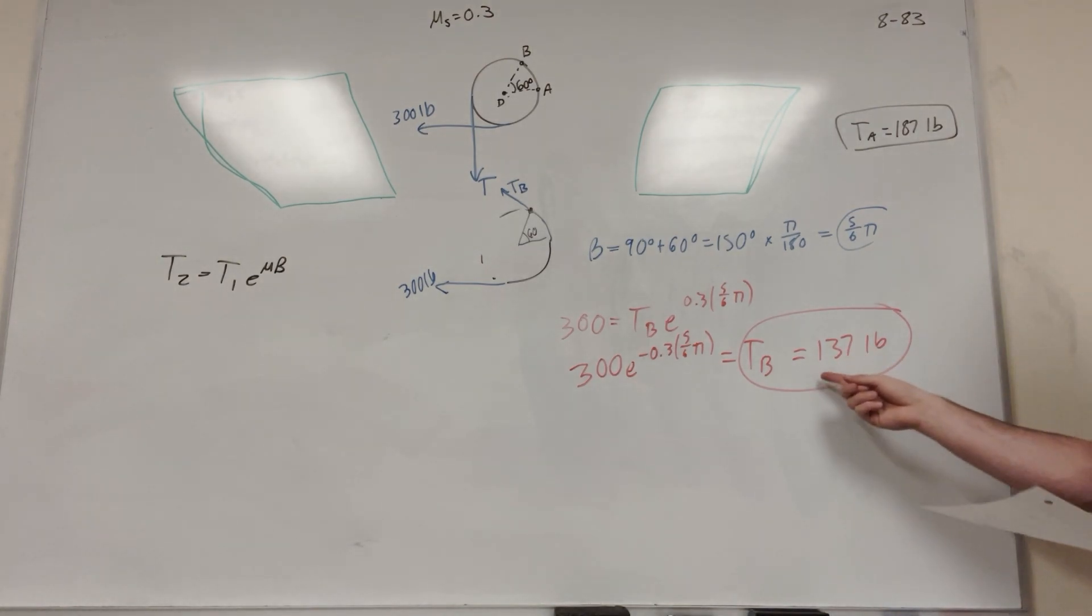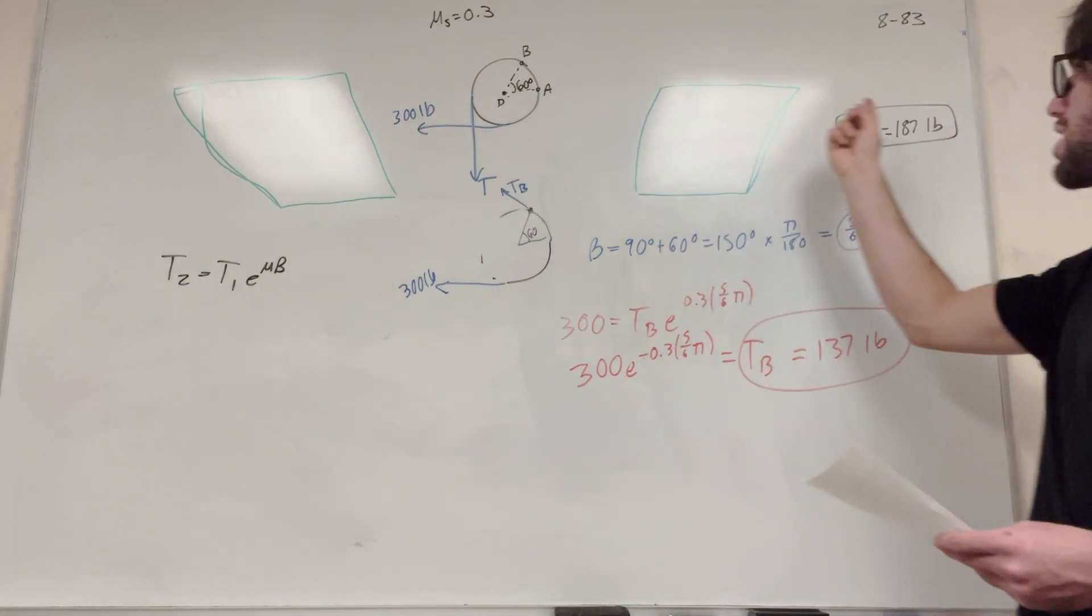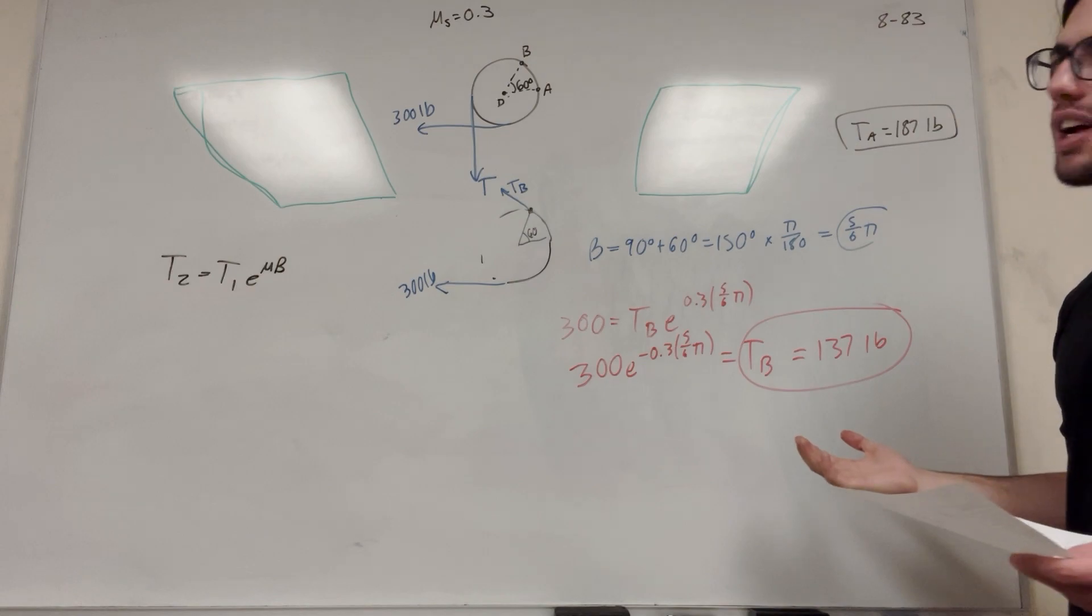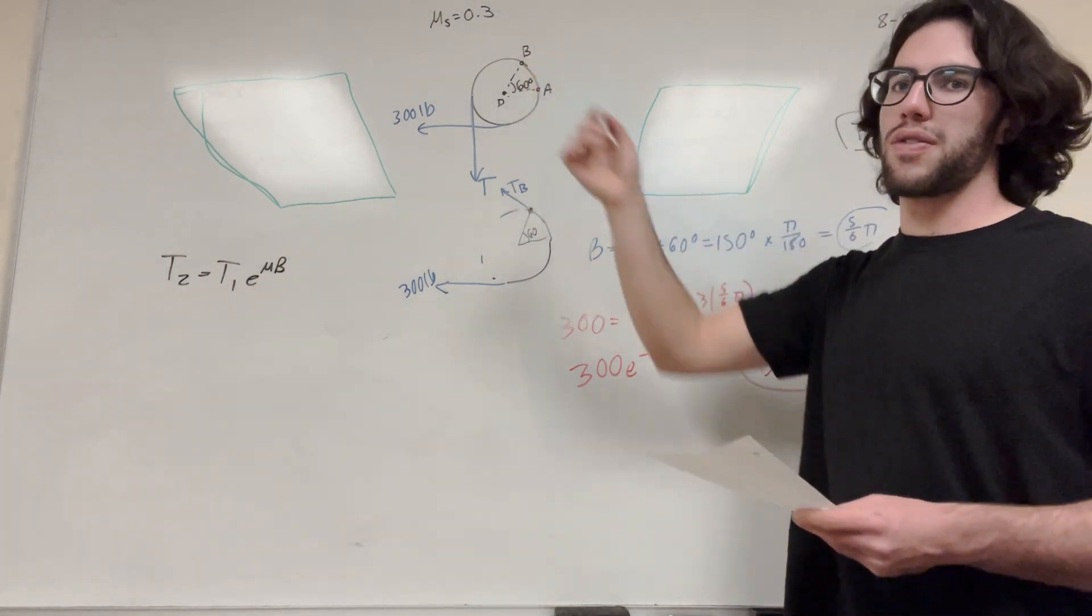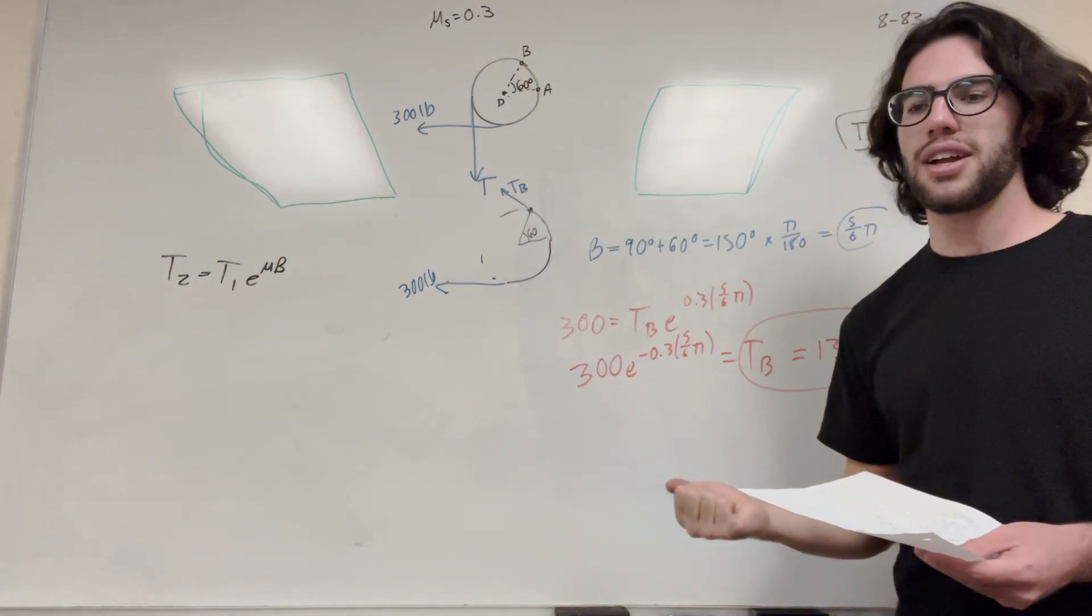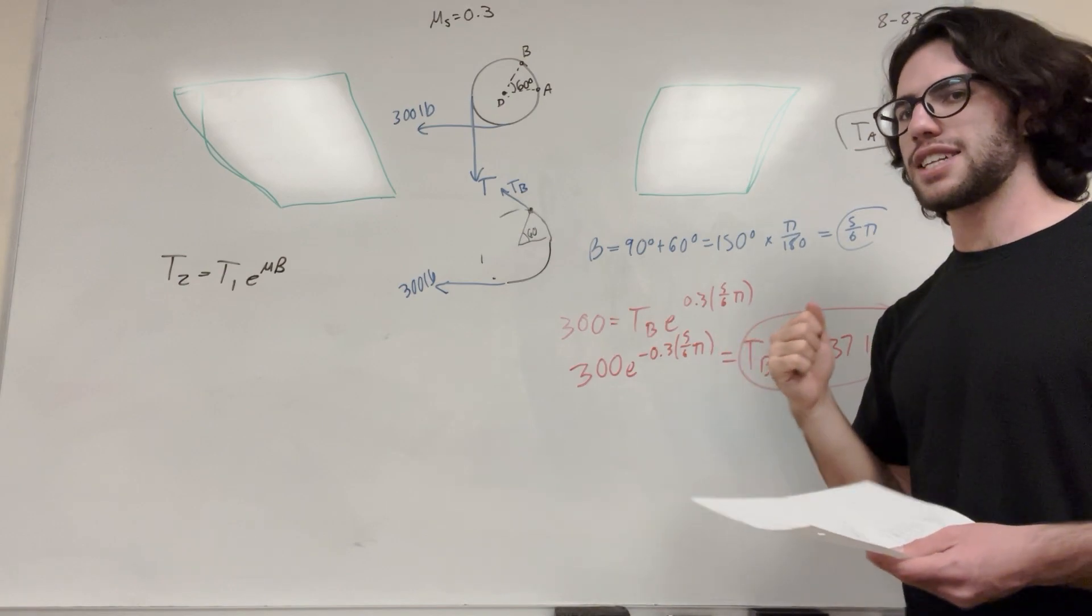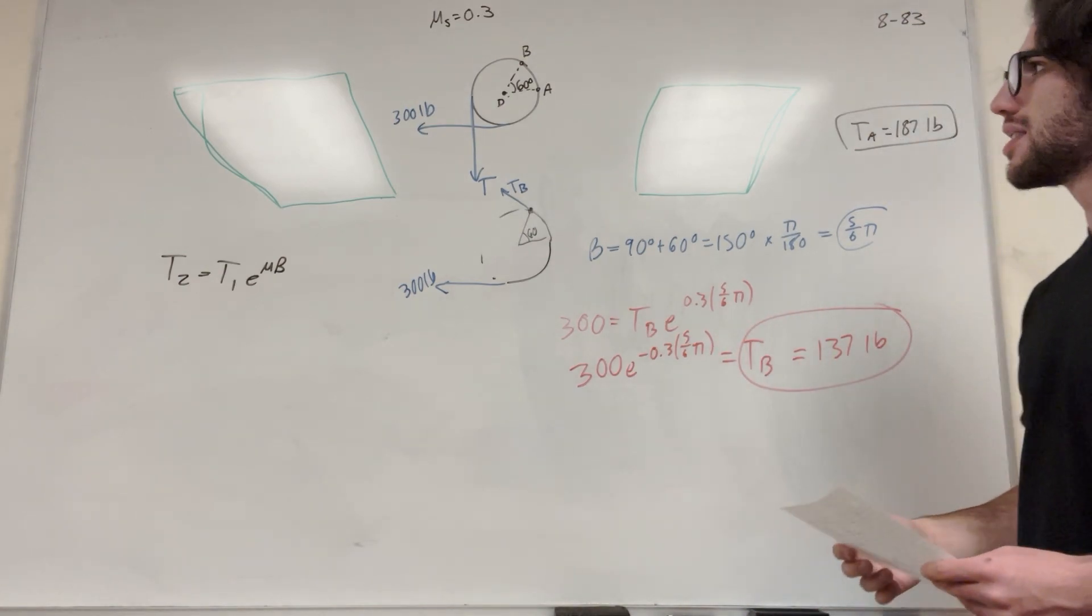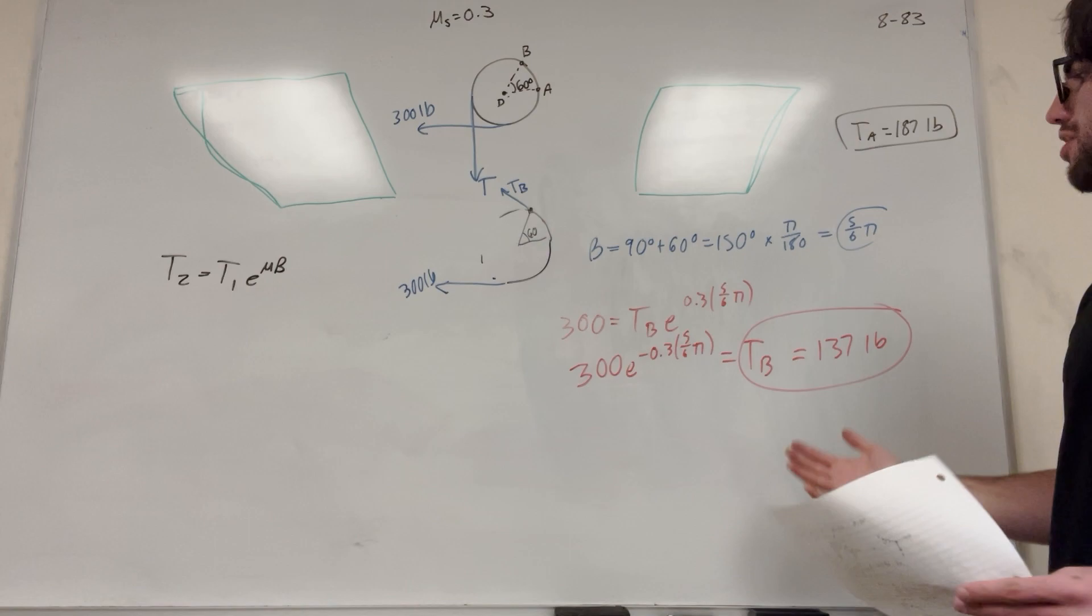So we found that the tension at B is less than the tension at A required, which makes a lot of sense, right? The further you go around, the more force, or the more friction is being applied. And therefore, the less tension you have to apply. So there you go. So that's how you solve this problem. Not too tricky.